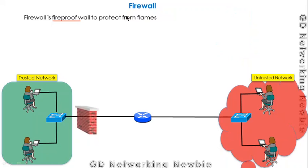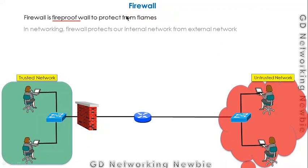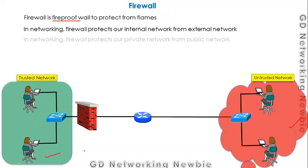In networking, a firewall protects our internal network from the external network. This is the firewall which is protecting us from the external network, and the internal side is also known as the internal network.